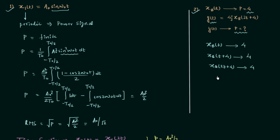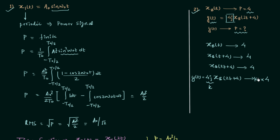Next, applying time scaling to get x8(2t + 4): time scaling also has no effect, so the average power remains 4. Now we apply amplitude scaling by multiplying 4j, giving yt = 4j·x8(2t + 4). Using the amplitude scaling property, the new power = |4j|²·4. Since |4j| = 4, we get 4²·4 = 16·4 = 64. So the average power of signal yt is 64, compared to the original power of 4.